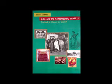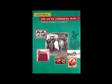Chapter 1: The French Revolution. On the morning of 14 July 1789, the city of Paris was in a state of alarm. The king had commanded troops to move into the city, and rumors spread that he would soon order the army to open fire upon the citizens. Some 7,000 men and women gathered in front of the town hall and decided to form a people's militia. They broke into government buildings in search of arms, and a group marched towards the eastern part of the city and stormed the fortress prison — the Bastille — where they hoped to find hoarded ammunition. The commander was killed and the prisoners released, though there were only seven of them. The Bastille was hated by all because it stood for the despotic power of the king.